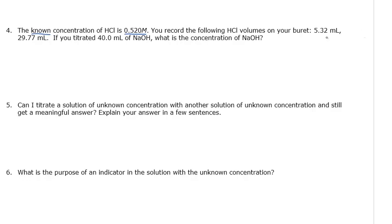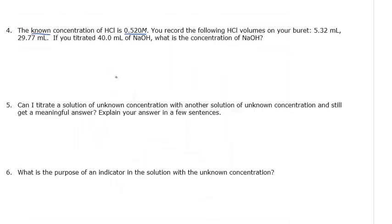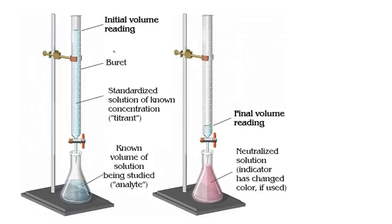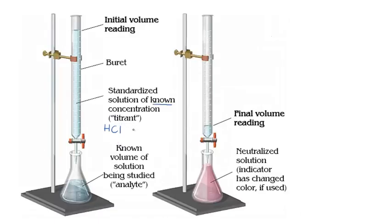Let's go back to that picture we were using before. The known is going to be up here in the burette. For number four, the known is HCl — that's our acid — and its concentration is 0.520 molarity.